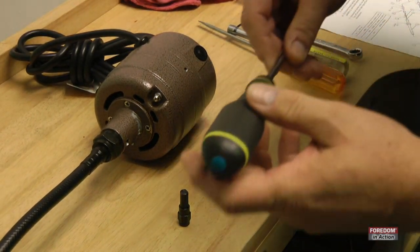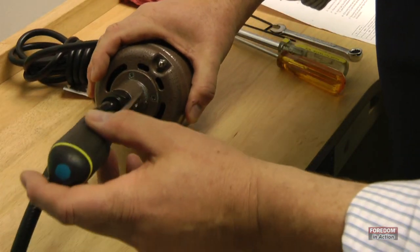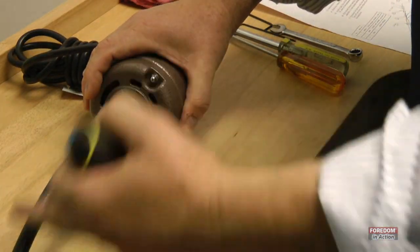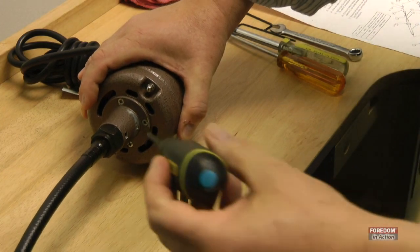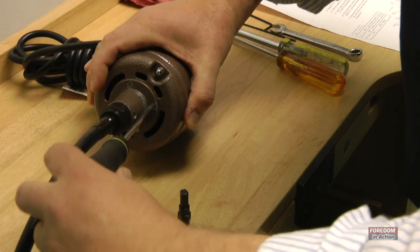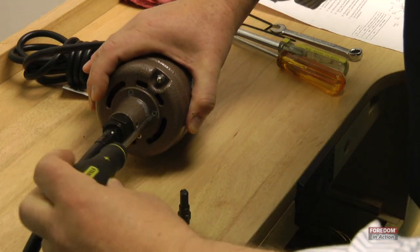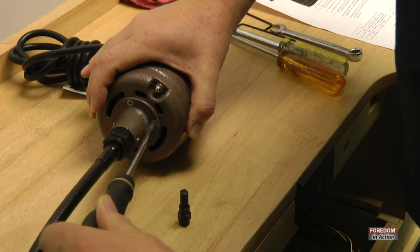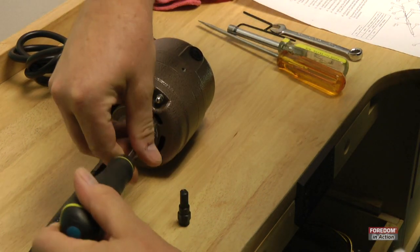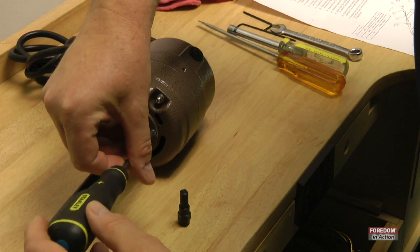You'll get a set of instructions with this, and the first thing the instructions are going to tell you to do is to take off your sheath. You do not have to do that. What you do need to do is remove the motor hub by unscrewing these four flathead screws.